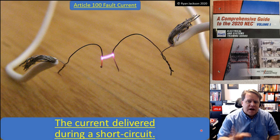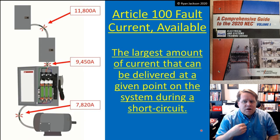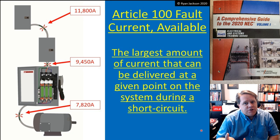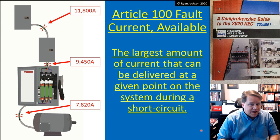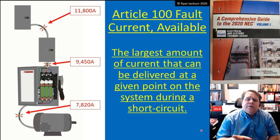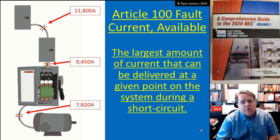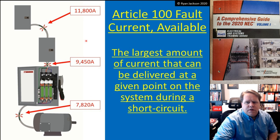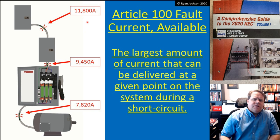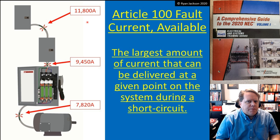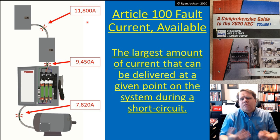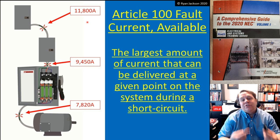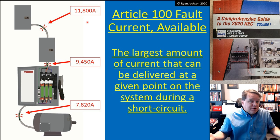So, how much current is flowing? That's the fault current. What is the available fault current? This is something that's been in the code for a very long time but did not have a definition. In 2020 they added a definition, which is the largest amount of current that can be delivered at a given point on the system during a short circuit. One of the things you'll notice is that the available fault current is different throughout the system. When people first learn about interrupting ratings and available fault current, they say, why doesn't the manufacturer mark the fault current? Well, because they can't - because that's installation specific.